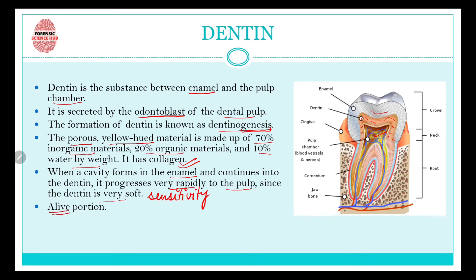Dentine is the alive portion of the tooth, unlike enamel which is the dead portion. To summarize: dentine is present between enamel and pulp, it is secreted by odontoblast cells, its formation is called dentinogenesis, it is a yellow-hued porous material, and a cavity extending from enamel into dentine leads to sensitivity.